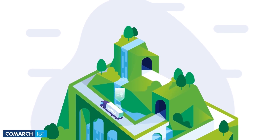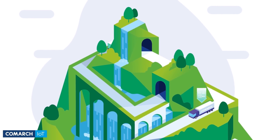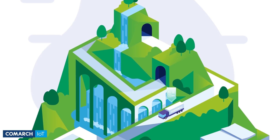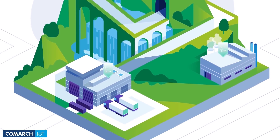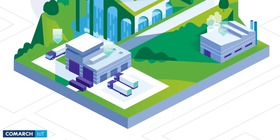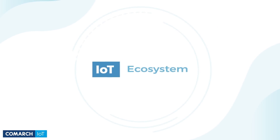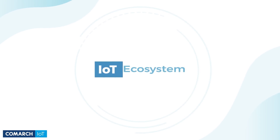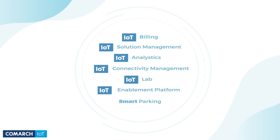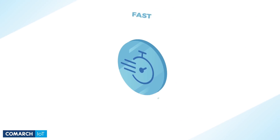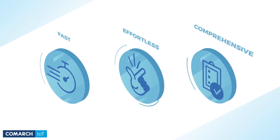Imagine a tool that lets you perform route optimization and asset tracking in logistics, or use a web of interconnected sensors to screen for dangerous chemicals in your workplace. With the Comarch IoT ecosystem, these are just two of the limitless number of use cases that you can easily handle in a fast, comprehensive, and effortless way.